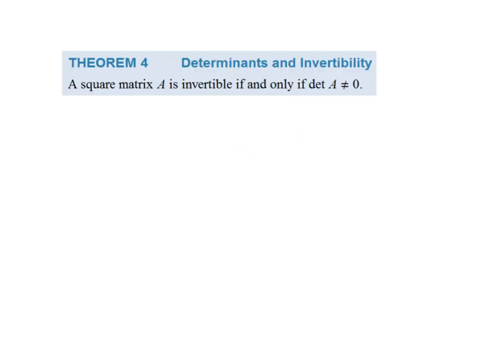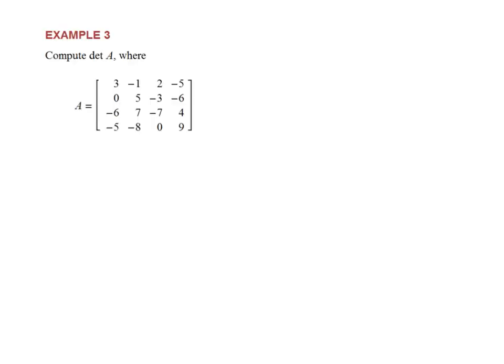Theorem 4 is something we've already seen: if the determinant is non-zero, then the matrix is invertible — and this is an if and only if. So if the matrix is invertible, then the determinant is not zero.